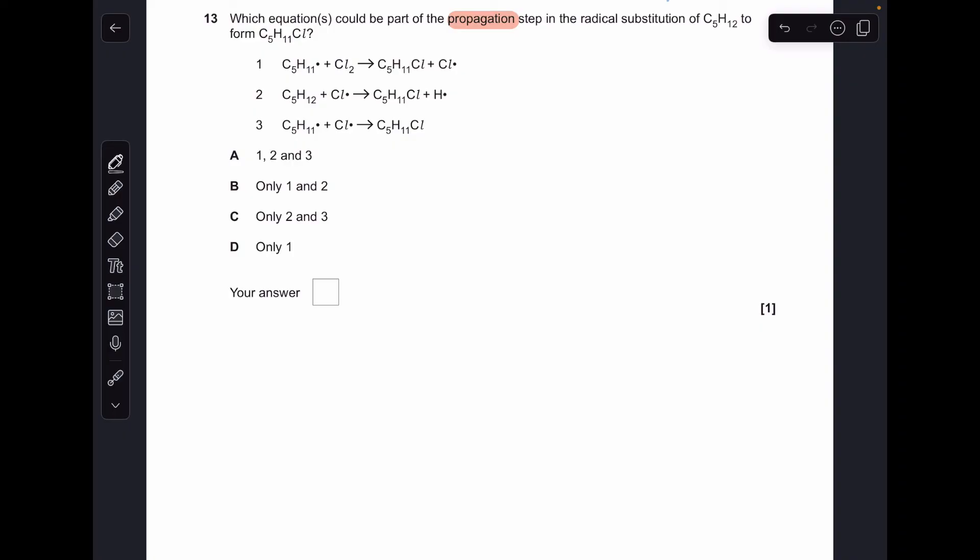Moving on to 13. It's got to be a propagation step for this mechanism. So one is okay. Two is not okay because of that H radical. We don't see that. And three is not okay because that's actually a termination step. So only one. So D.